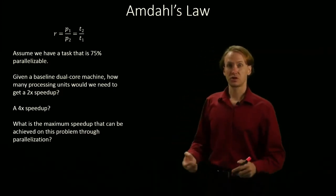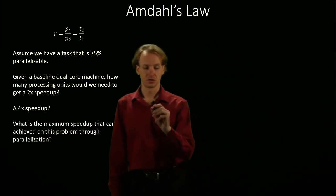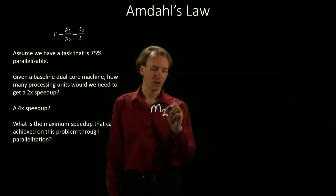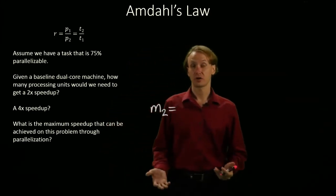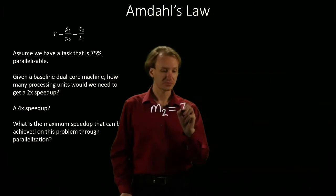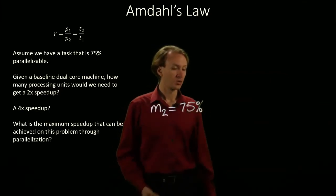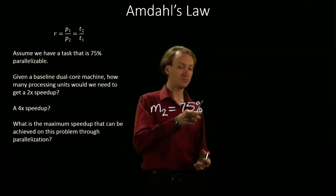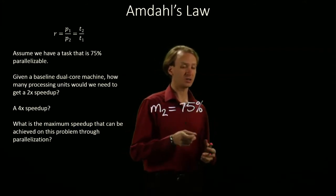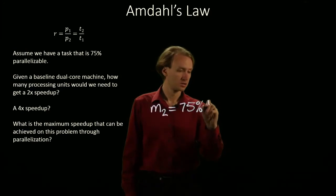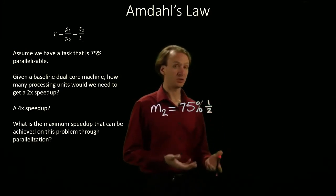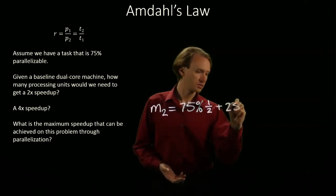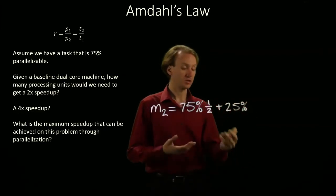So, we'll start by looking at our baseline machine, which is this dual-core machine, and we know that 75% of our code is parallelizable. We also know that this is a dual-core machine, so there's already some parallelizable speedup on this part. It's already taking half as much time as it really could.